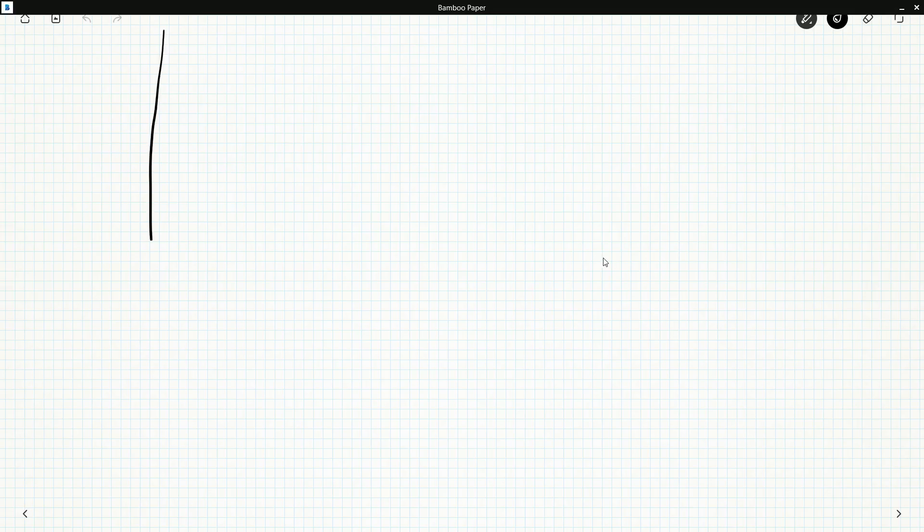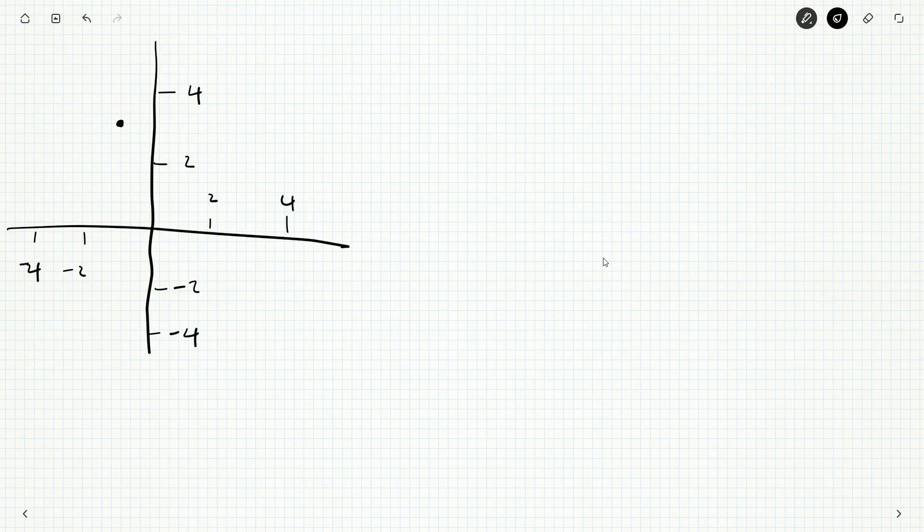I'll just draw this picture again here. [Drawing axes with marks at 2, 4, -2, -4 on both axes] And P was about here. So the x-coordinate for P is about here, and the y-coordinate is about here on the x and y-axes.